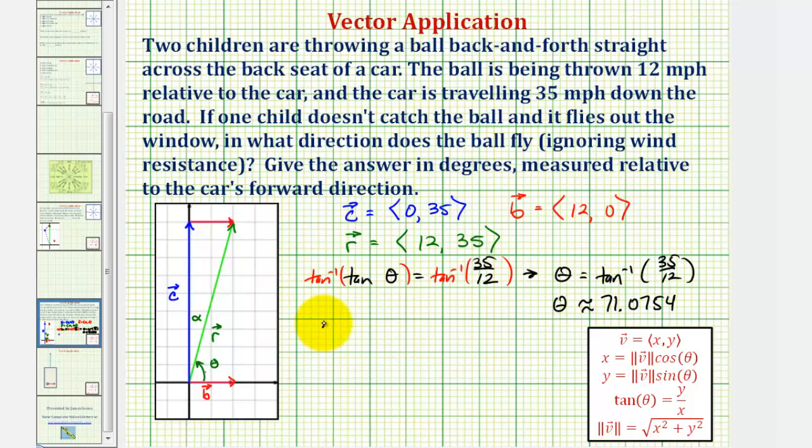Which means alpha, which equals 90 degrees minus theta, would be equal to 90 degrees minus 71.0754 degrees. So alpha is approximately 18.9246 degrees.